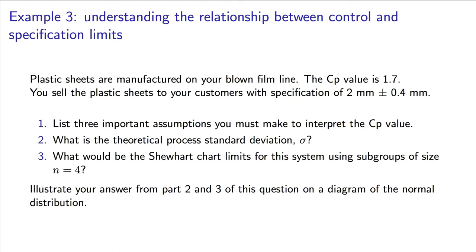Answer the following question next: what would be the Shewhart chart limits for this system if you had used subgroups of size n equals 4? To answer this last question, I strongly suggest you draw an illustration on a piece of paper, showing where the specification limits are and where the Shewhart chart limits are. Draw this with a diagram of the normal distribution superimposed.